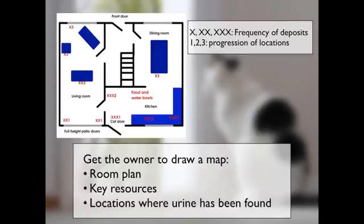We don't necessarily ask owners to differentiate between spray marks and urine house soiling — we're just interested in whether urine has been found, because there can be situations where what appears to be a spray mark is in fact urination. We ask them to include additional information on the frequency of deposits, using the convention of 1x meaning infrequent and 3x's meaning very frequent — so that might be daily versus several times a day.